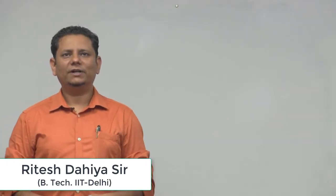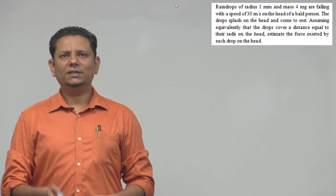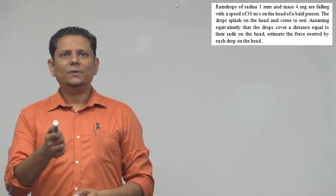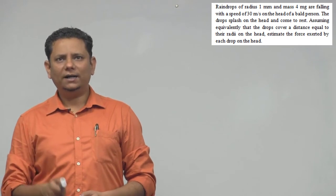Next question. The question says raindrops of radius 1 mm and mass 4 milligram are falling with a speed of 30 meter per second on the head of a bald person. The drops splash on the head and come to rest.